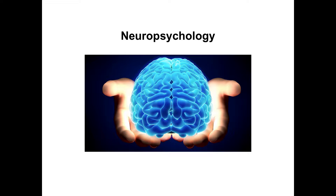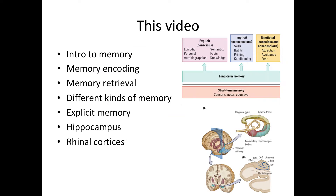Hello everyone and welcome back to Neuropsychology. In this video we are going to start off the chapter about memory. We will talk about the introduction to memory, memory encoding, memory retrieval, and different kinds of memory. Then we will talk about explicit memory, which consists of episodic and semantic memory, and dive deeper into the hippocampus and the rhinal cortices nearby.